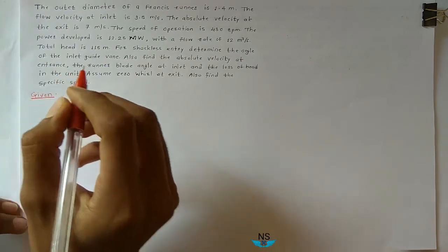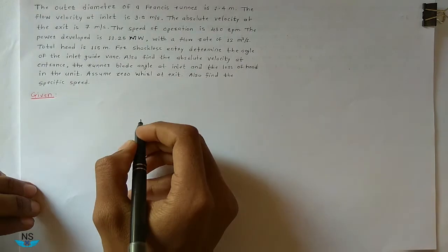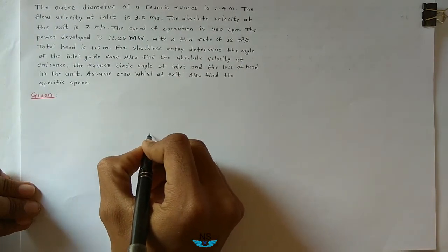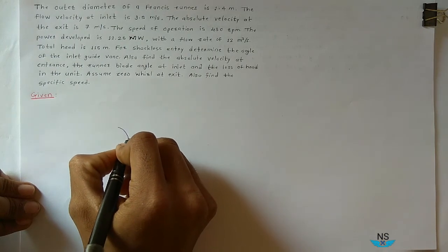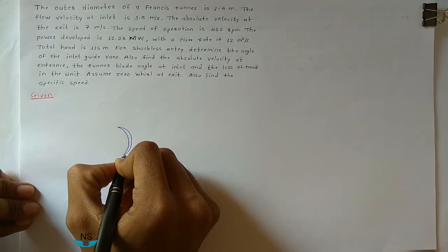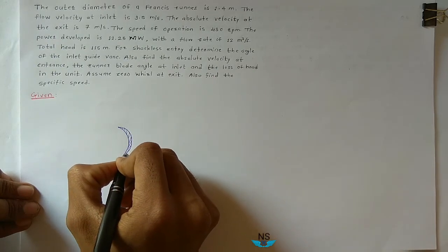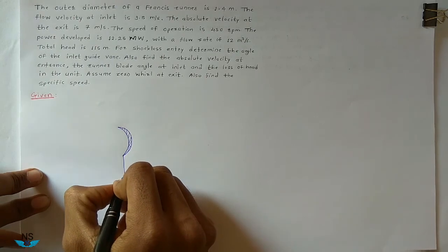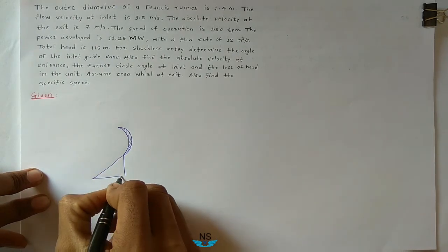Before that, I am drawing here a Velocity Triangle — Inlet and Outlet Velocity Triangle. This is one of the Vanes of a Francis Turbine. This is the Inlet Velocity Triangle.